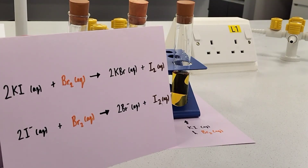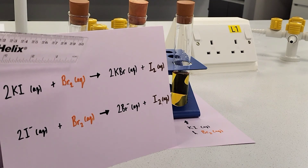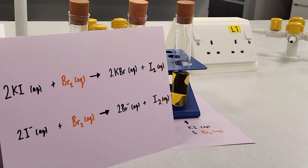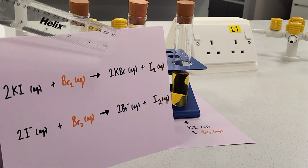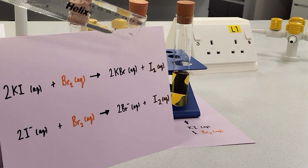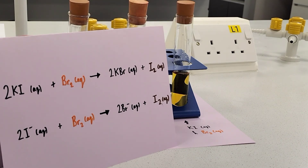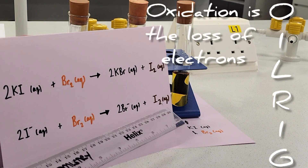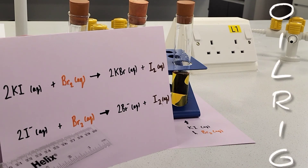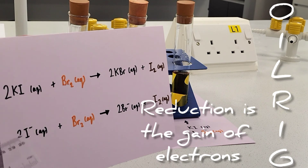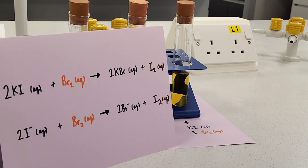To summarise the reaction: potassium iodide reacts with orange bromine molecules to form potassium bromide, as iodine is displaced out. The balanced equation is: 2KI + Br2 → 2KBr + I2. The ionic equation shows the redox reaction: iodide ions are oxidised from I⁻ to neutral iodine atoms in the I2 molecule, while bromine atoms in Br2 are reduced from Br2 to 2Br⁻, gaining electrons.